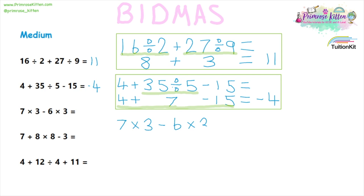Our next question has some multiplication in. Multiplication comes before subtraction in BIDMAS, so that is the bit that needs to be done first. We have to do seven times three and six times three before we do any subtraction. So what we get is 21 minus 18, giving us three.